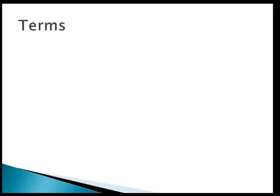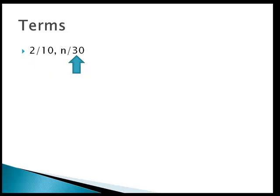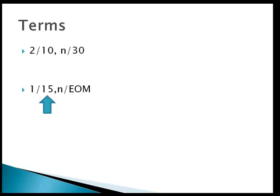There are also discount terms. Whether we're buying or selling inventory, companies often offer discount terms to encourage early payment. For example, you always see a number slash number followed by N and another number. This means we are being offered a 2% discount if paid within 10 days; otherwise the balance, the net, is still due within 30 days.